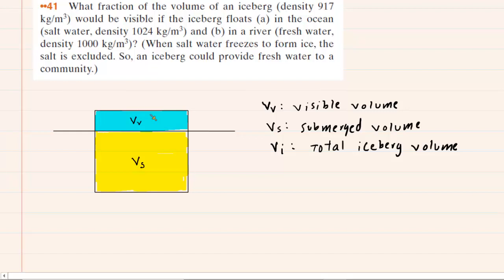To start this question, we've drawn a picture of an iceberg floating in water, partially submerged. We've labeled two sections: the portion visible above the surface of the fluid is labeled V sub V, which is the visible volume of the iceberg. Beneath the surface, we have V sub S, which is the submerged volume — the portion of the iceberg that we cannot see.